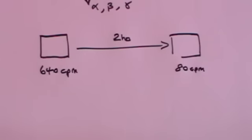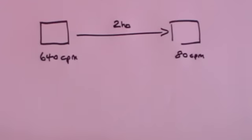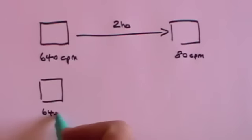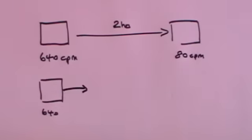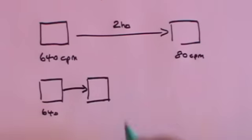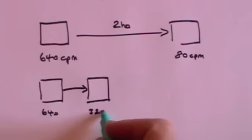Now the best way of doing this is just to do it in stages. So you start with 640. And after the first half-life what would you expect? Well, you would expect the count rate to halve. That's the definition. So it will be 320.